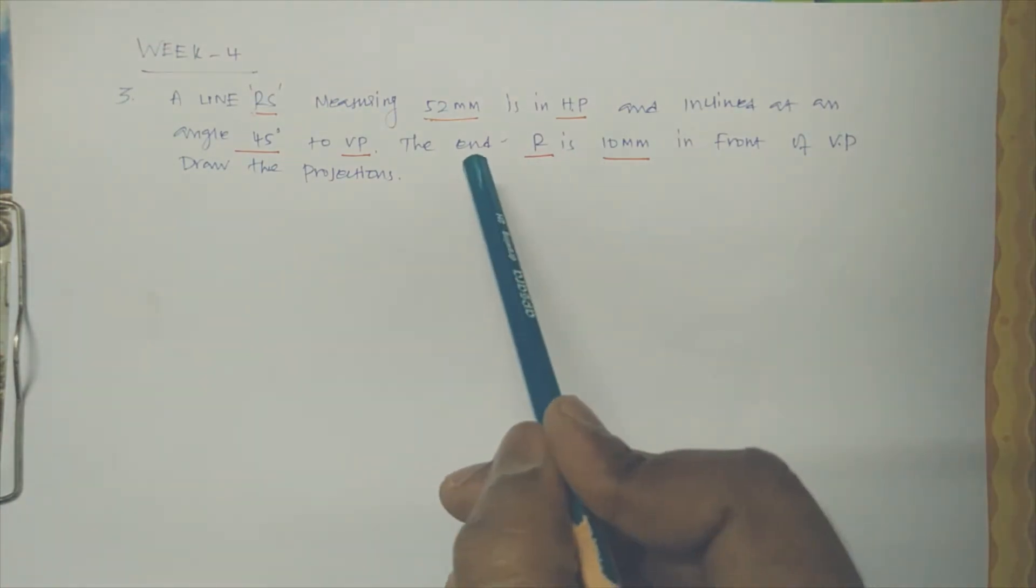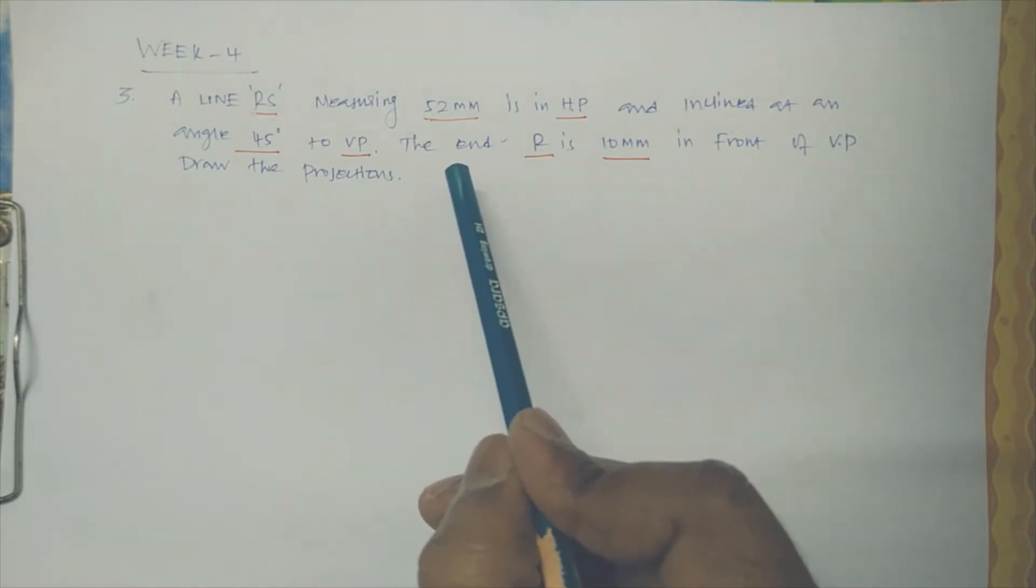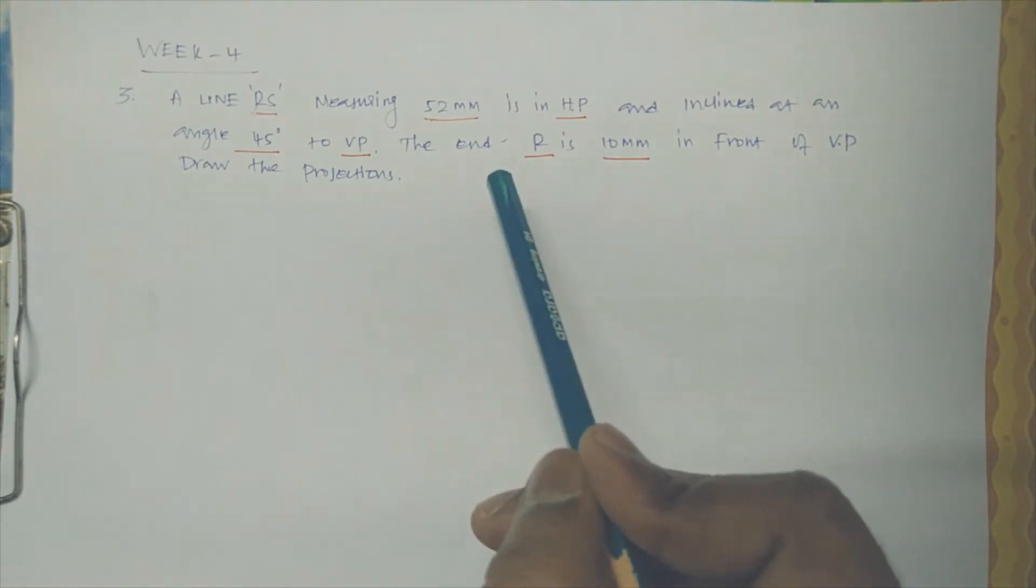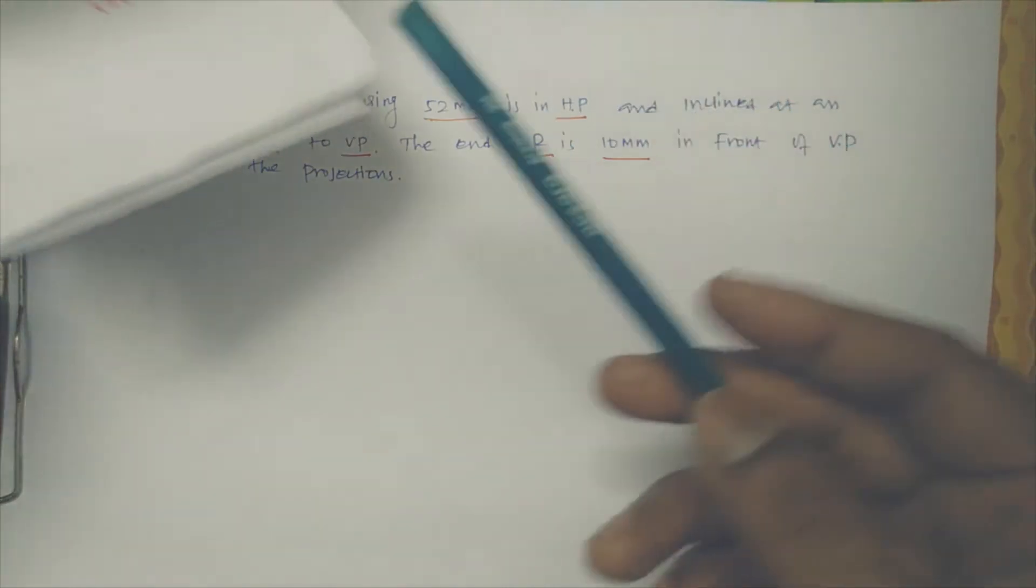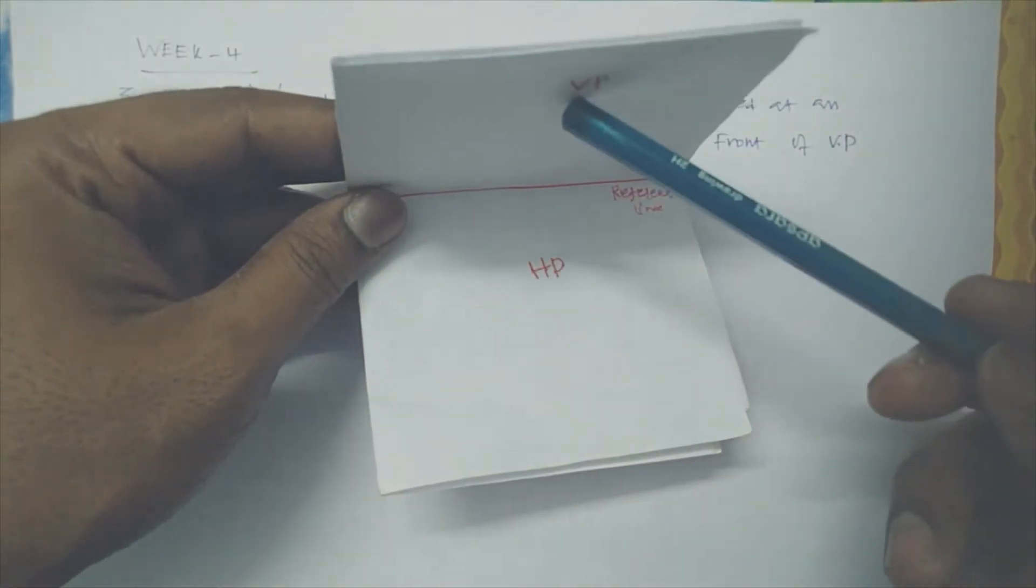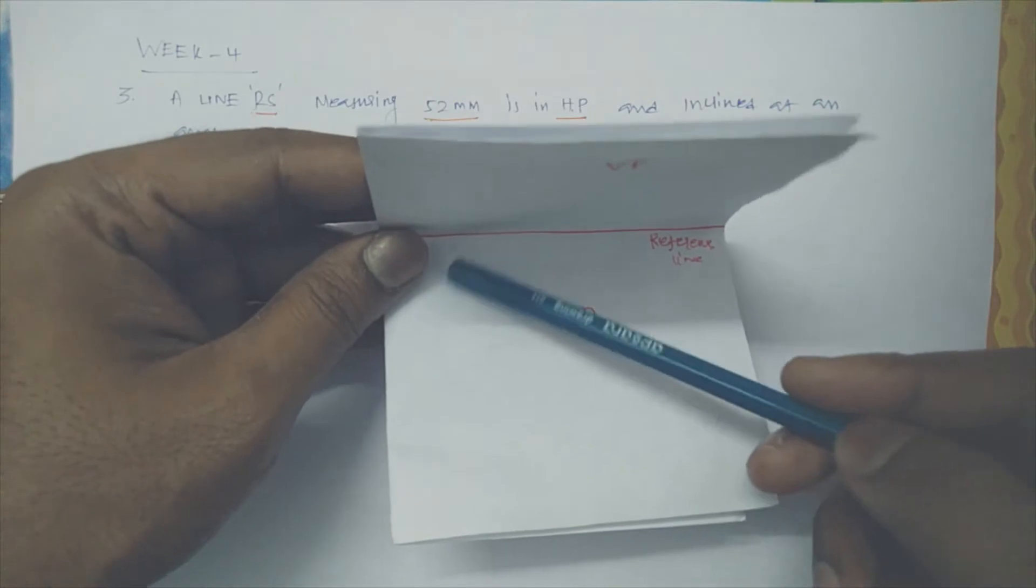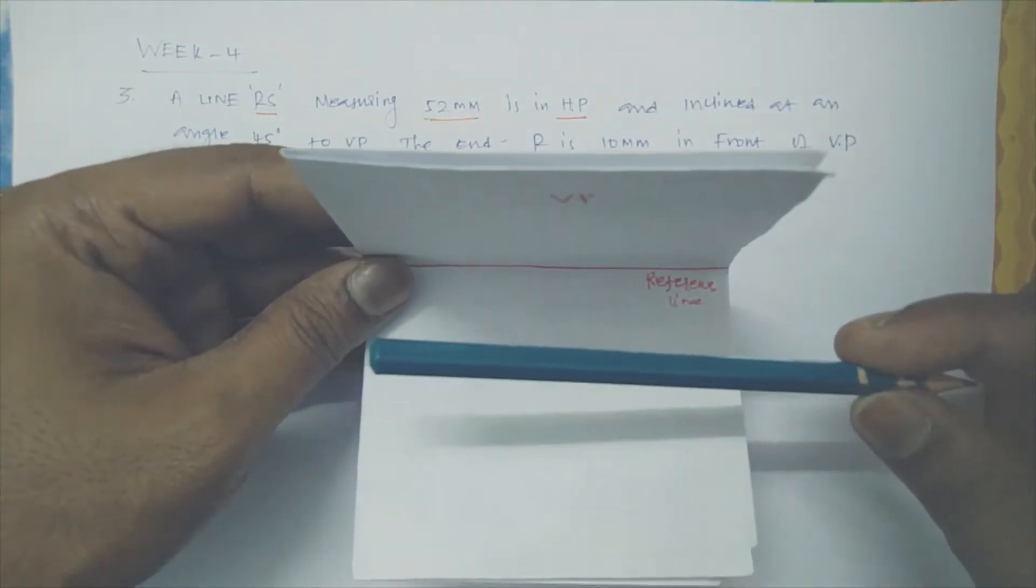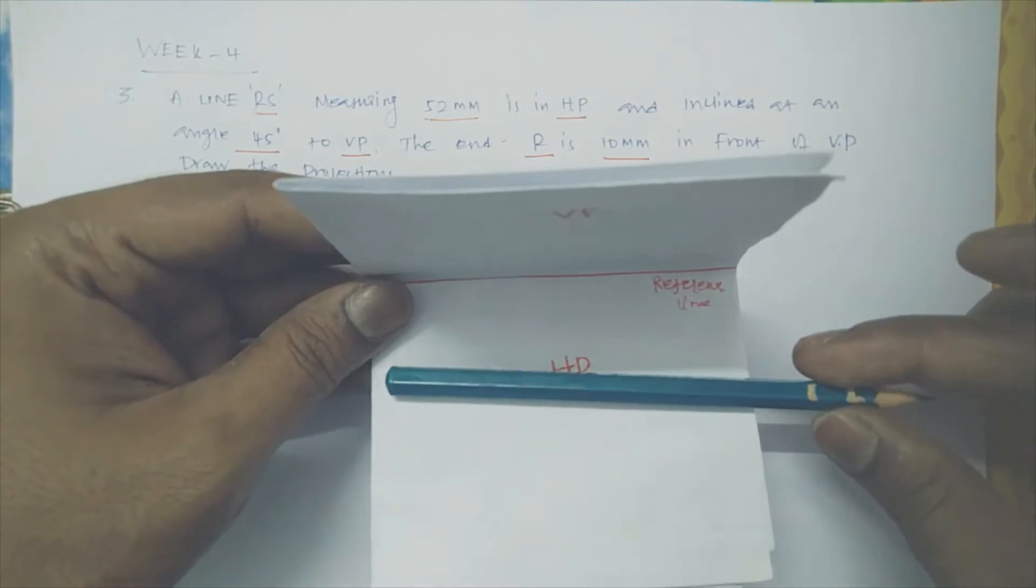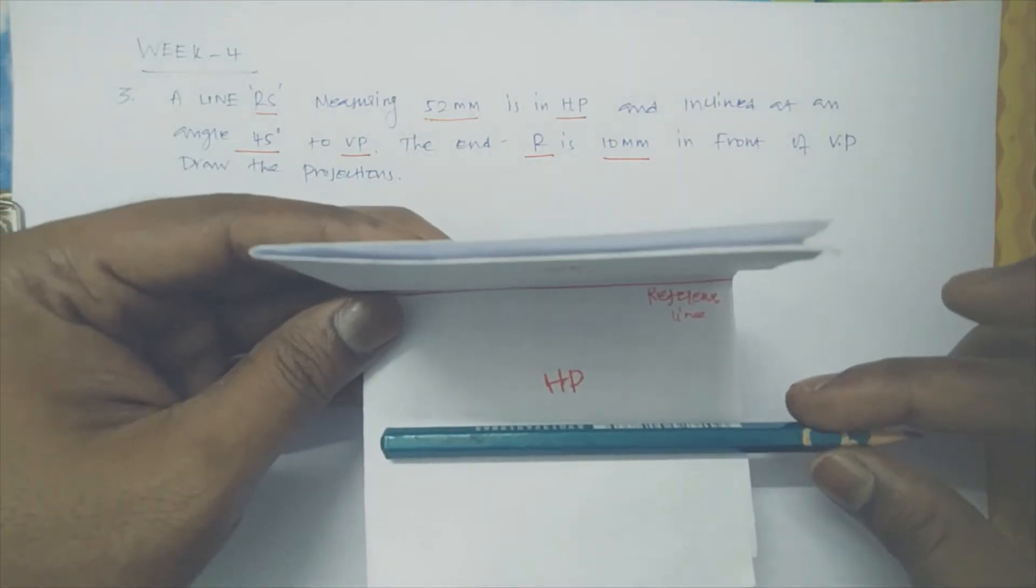What we have seen in the second problem, the mirror image, is the third problem. It's nothing there. So let us see, this is VP, this is HP. They are seeing one line, so let us assume this is a 52mm line in HP. I am just keeping it in the HP. It is inclined at an angle 45 degrees to VP.